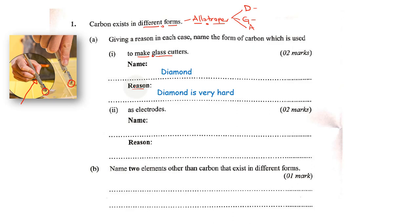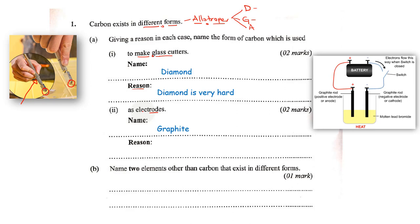We go to Roman numeral two: Which one is used as electrodes? Now electrodes are basically usually rods in nature, in solid form, that link between the solid wire and the circuit.